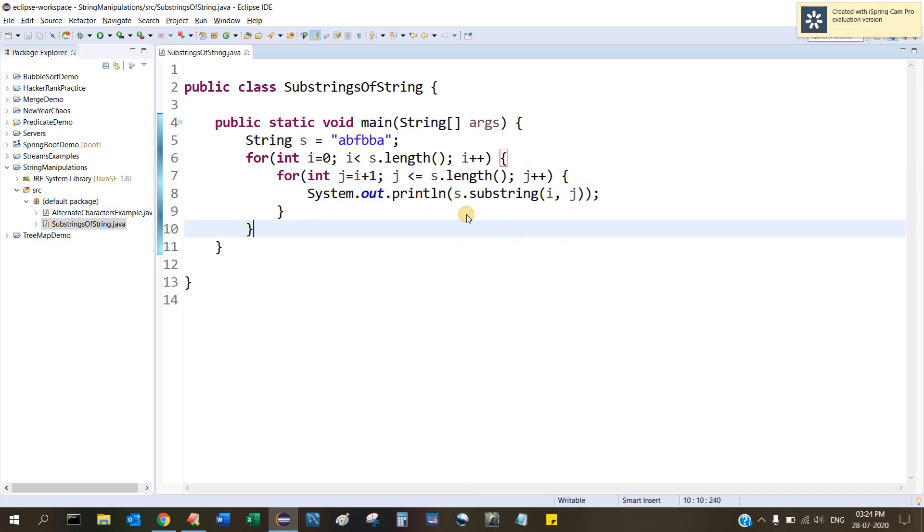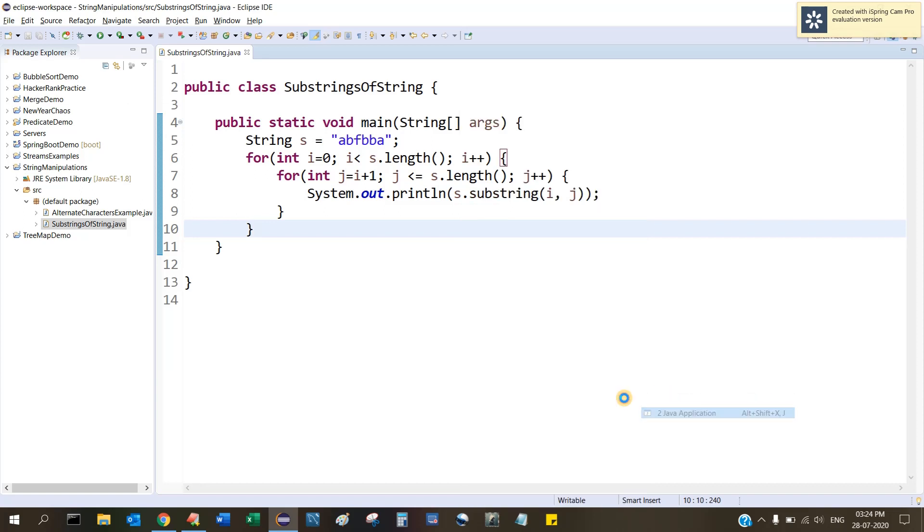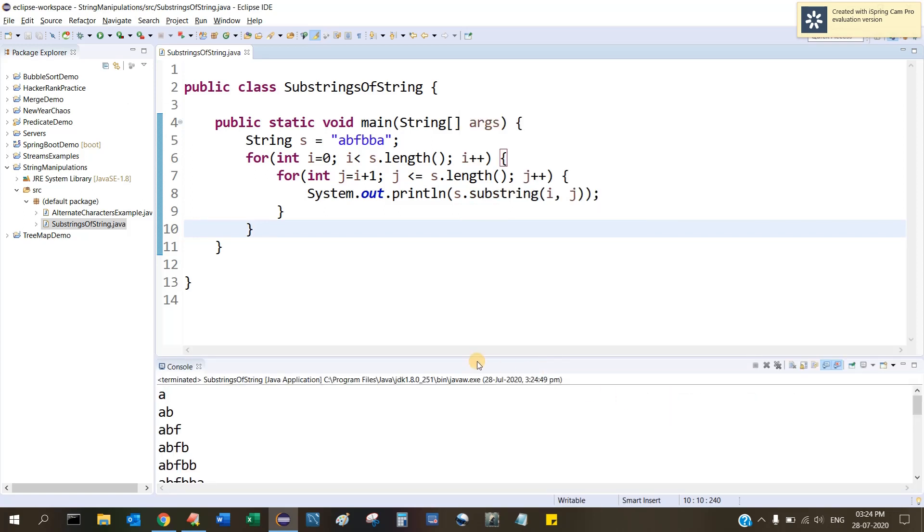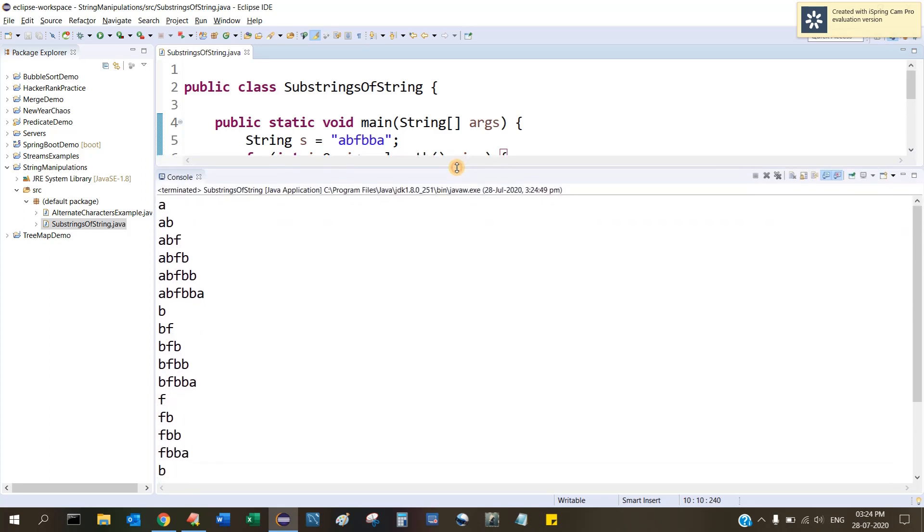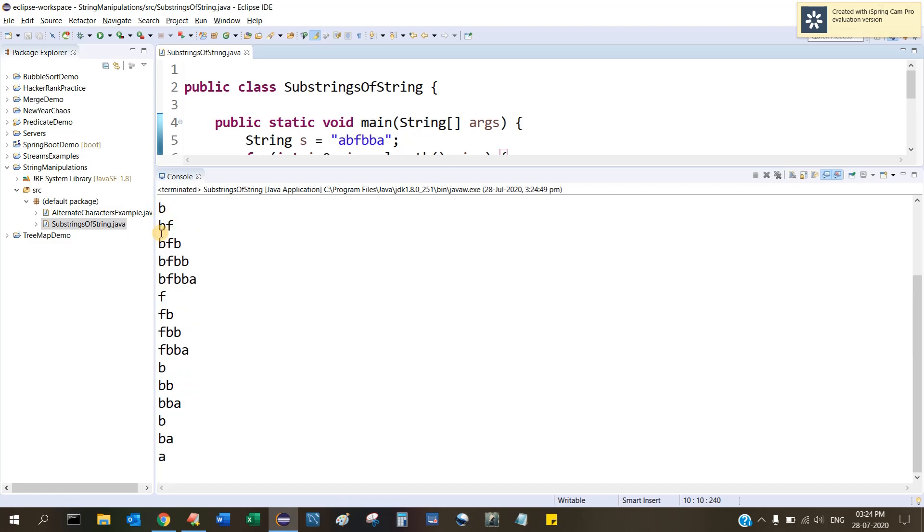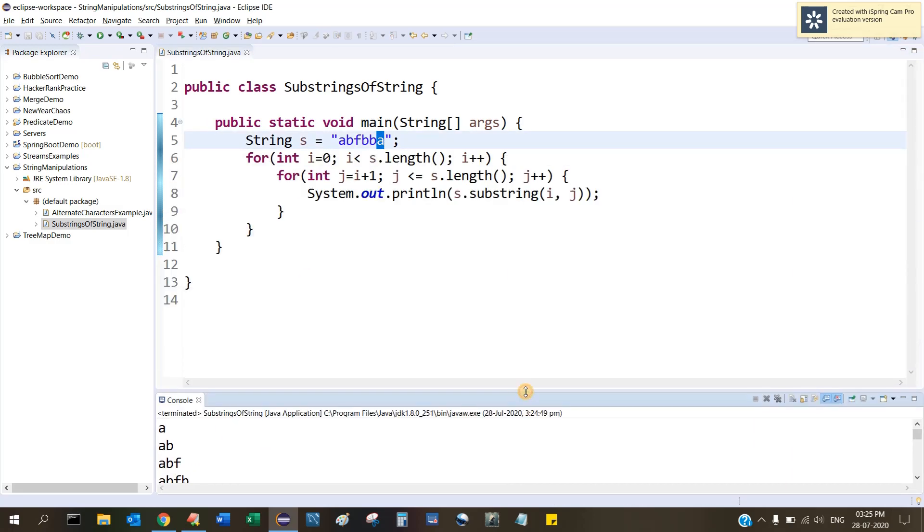Right, here you go! So what are all the substrings here? See: 'a', 'ab', 'abf', like that. Then 'b', 'bf', 'bfb'. Then at last you will get 'a'. So two for loops is the solution to print all the substrings of a given string.